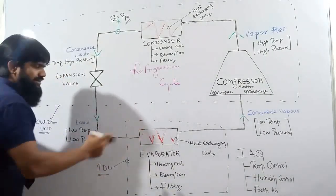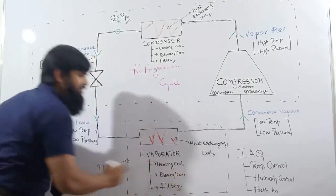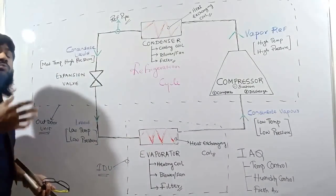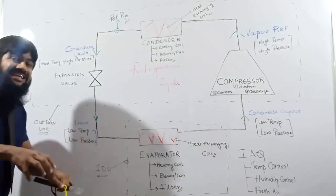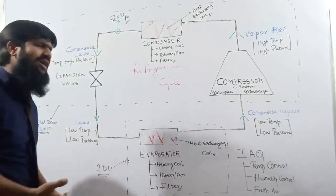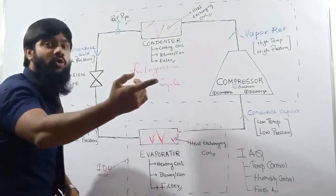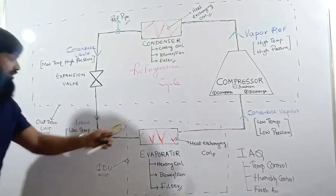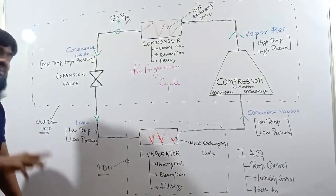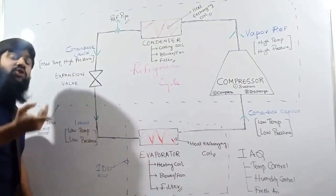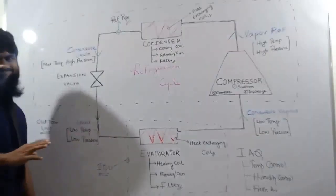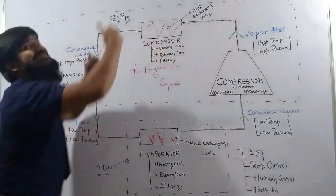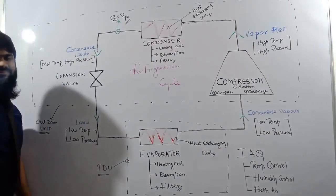The room gives away its heat to the coil, which contains liquid refrigerant. This liquid refrigerant converts to condensate vapors due to the heat rejected by the room to the coil. That is why the evaporator coil is called a heating coil - as it absorbs the room heat - and the condenser coil is called a cooling coil - as it rejects heat to the atmosphere.